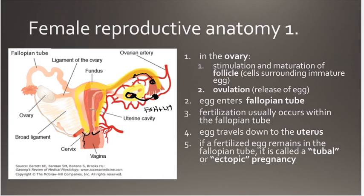The vagina itself is also made of smooth muscle. So the uterus, the vagina, and the cervix all are smooth muscle, and they're all able to contract down.